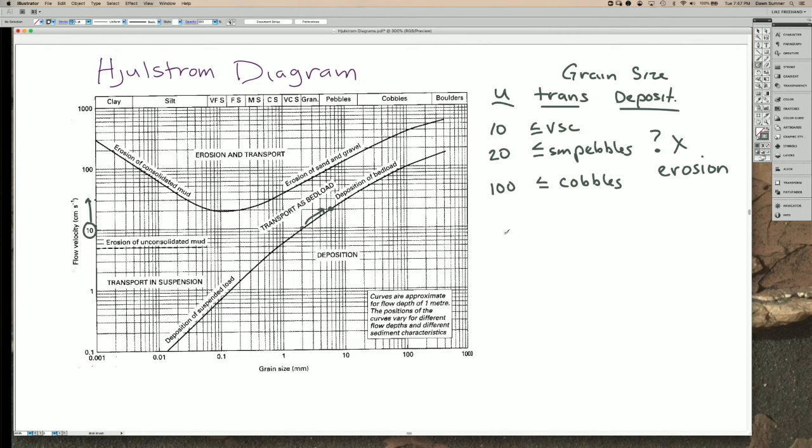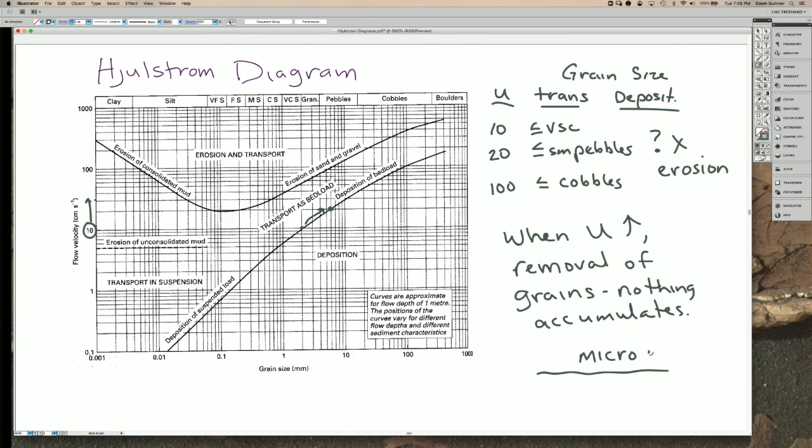Basically, when U increases, you have removal of grains and nothing is deposited. That's the generalization. But often what that would look like is a break in the sediment here. You would get maybe a micro-unconformity.